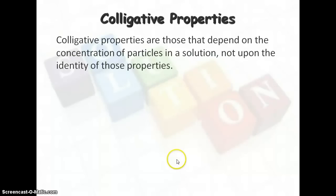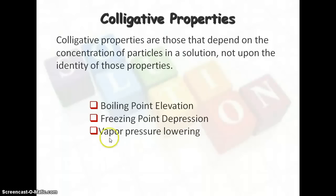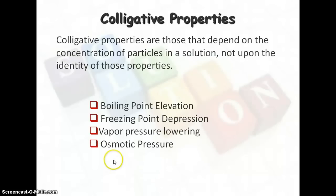Colligative properties affect a couple of different things. Boiling point — the more solute you have, the higher the boiling point will become. Freezing point — the more the concentration, the lower the freezing point will be. Vapor pressure is also another one, so you see a lowering in vapor pressure the more particles you have in a solution. And osmotic pressure also lowers. So these are several properties affected by the amount of particles in a solution.